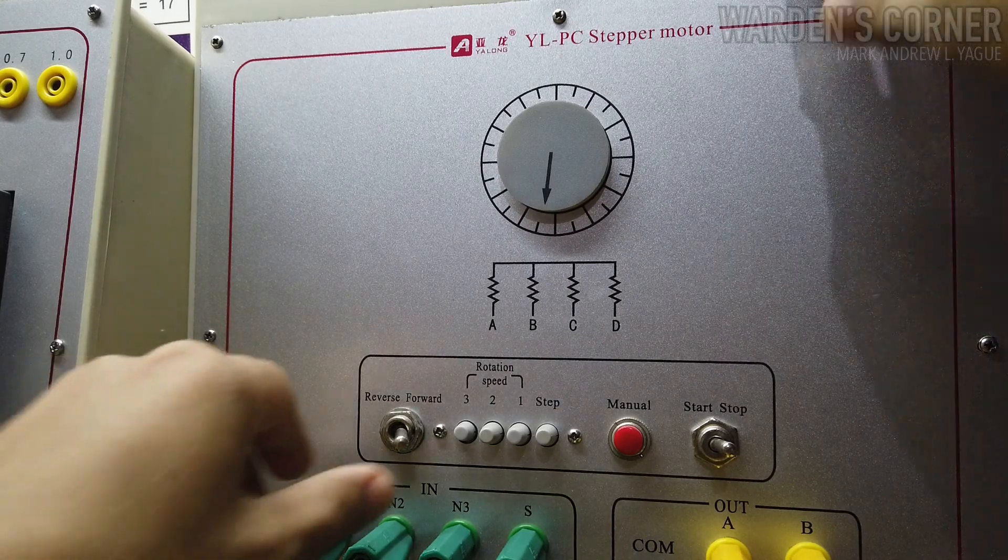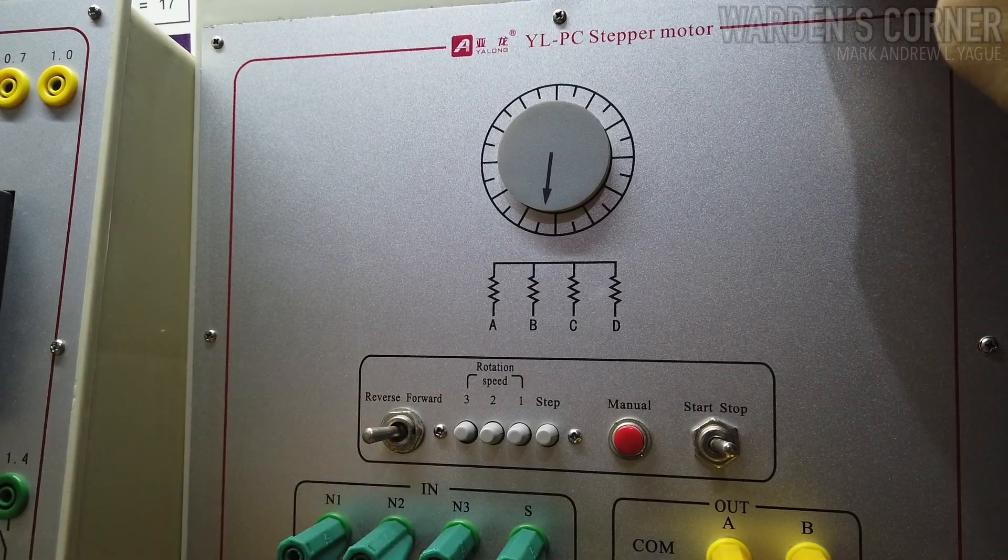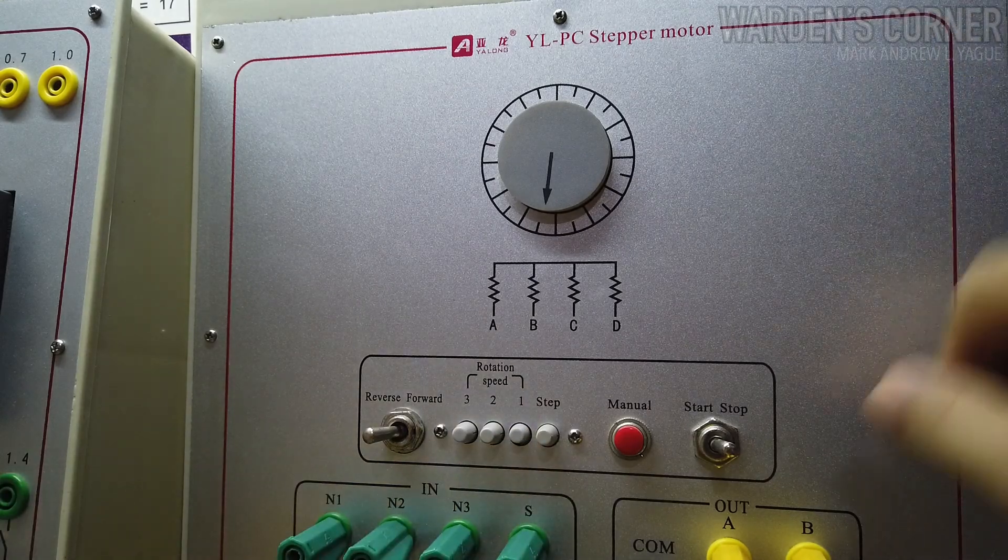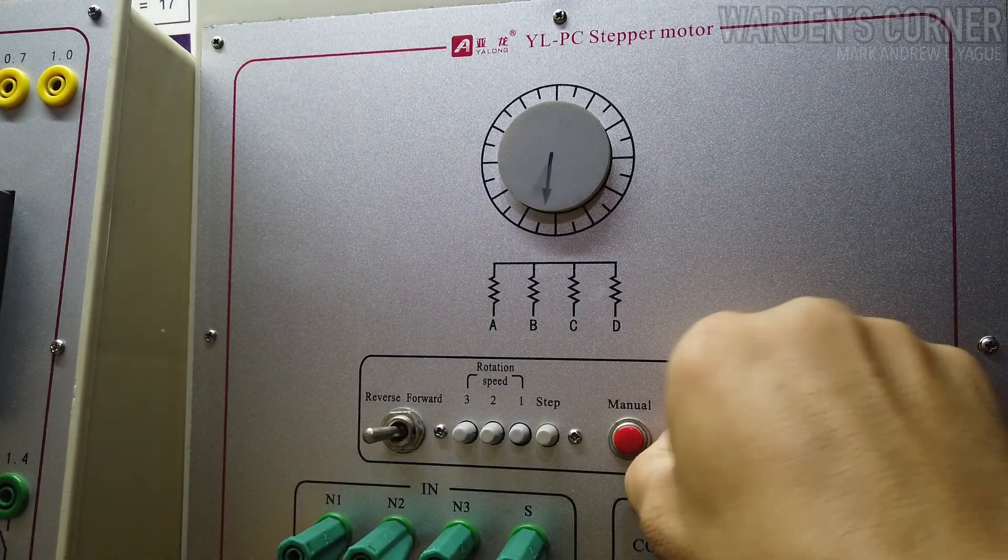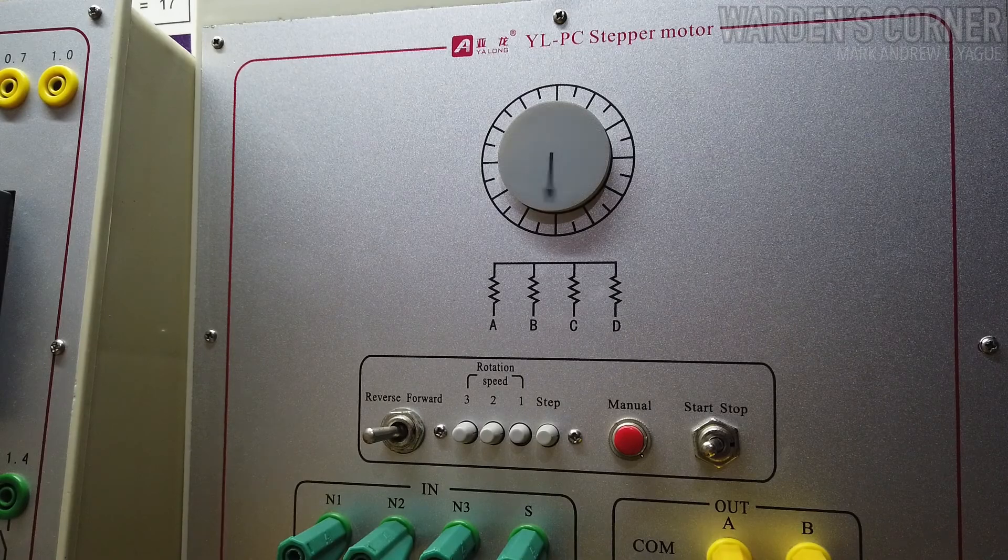Condition 2. Now, select reverse direction. Press speed 1 controller, then start the program. Speed 1 gives us a time interval of 2 seconds.